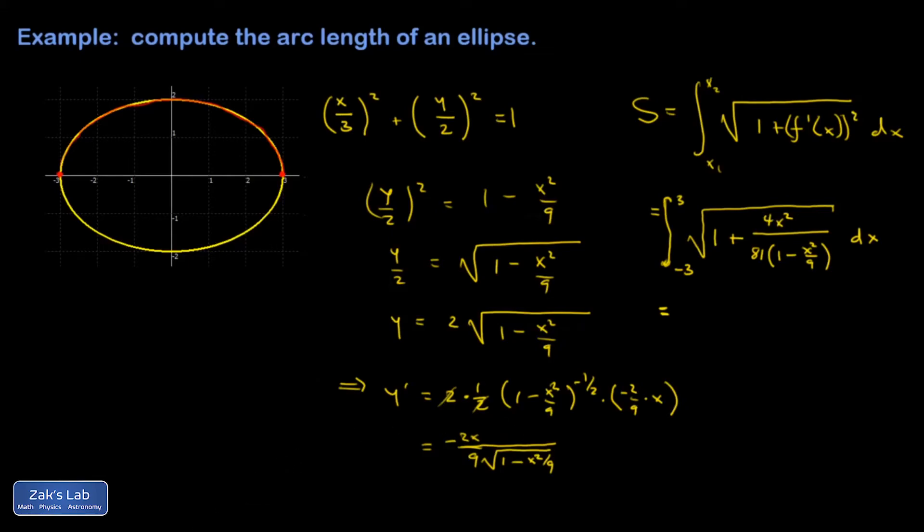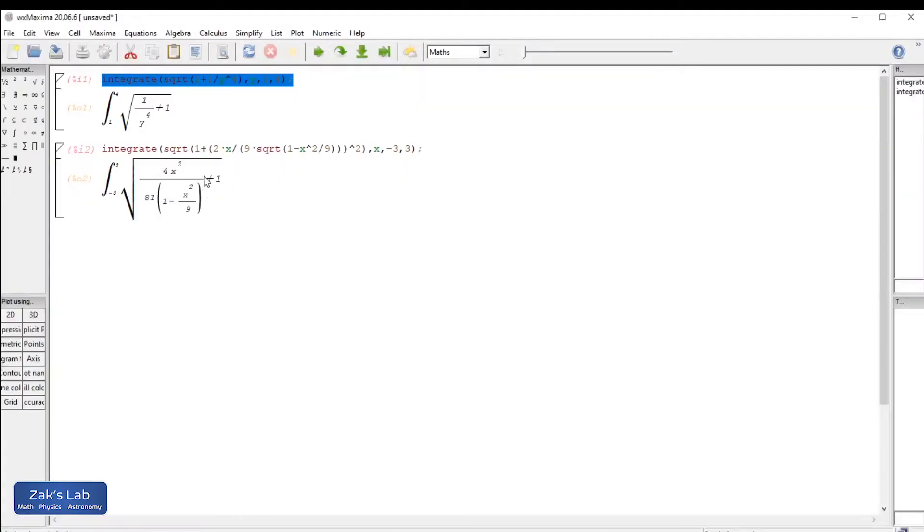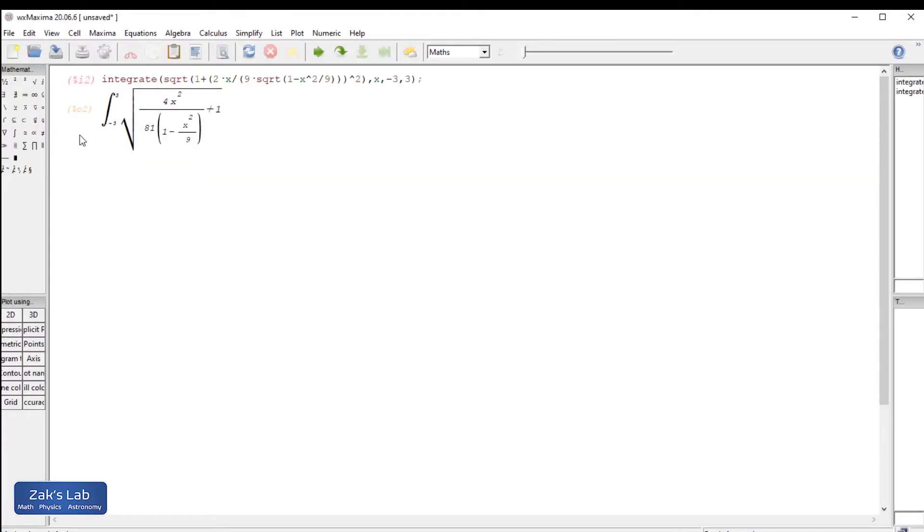So we go to a utility to get it done. And I happen to have already put this thing in. I wrote it in a slightly different form. But I don't want you to have to watch me type this in for several minutes. So I already put it in.